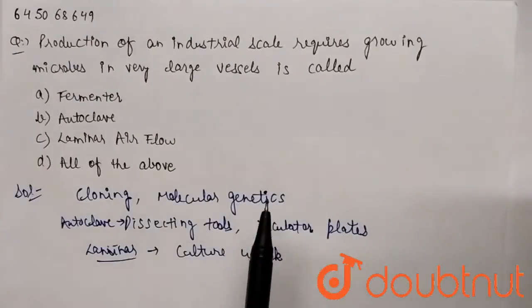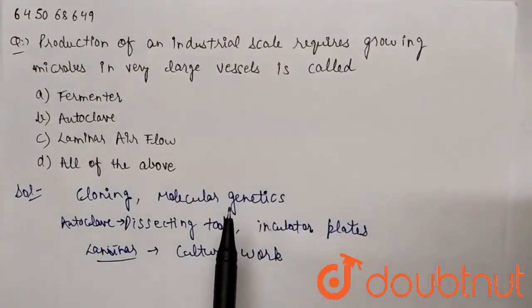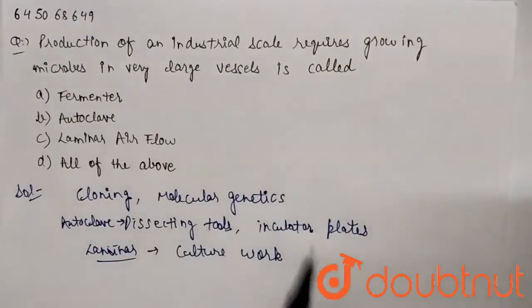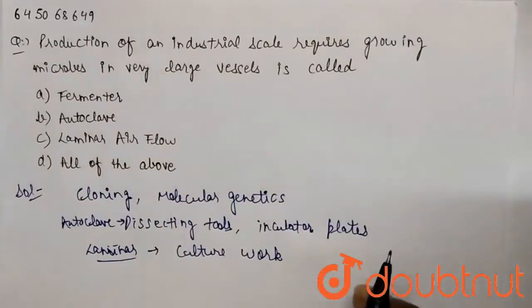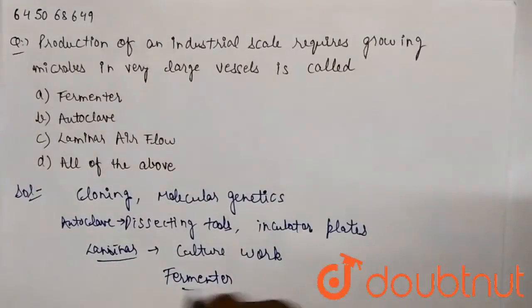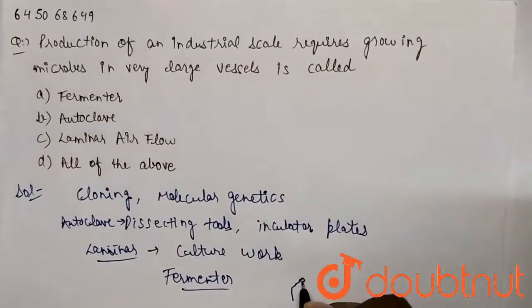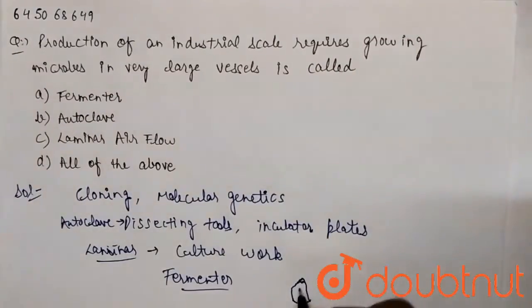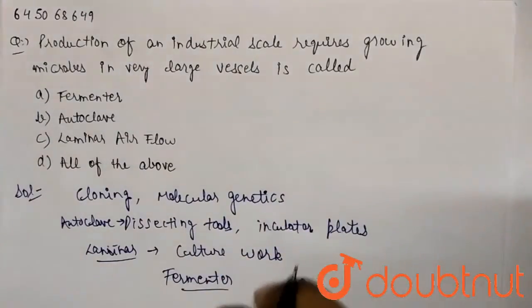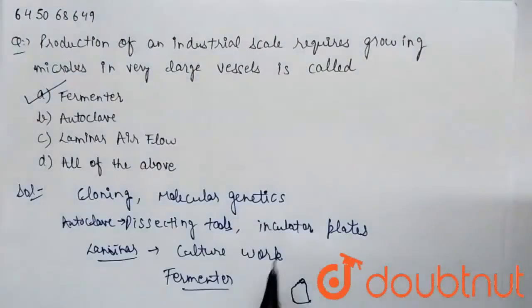All of the above can't be the right answer, but fermenter is the right answer. Fermenter is basically large vessels where the microbes are grown in very large amount in the industrial scale. Very large tanks are there - this is one tank, you can see. Similarly, many large tanks are there where microbes are grown and proper growth facility and growth needs are provided. So the correct option to this question is option A, fermenter.